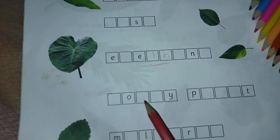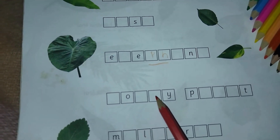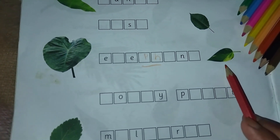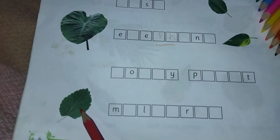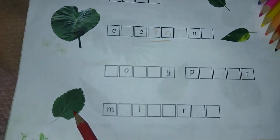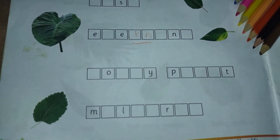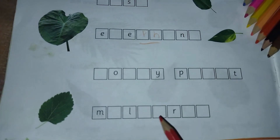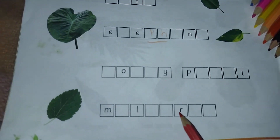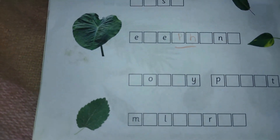M-O-N-E-Y, money; P-L-A-N-T, plant — money plant. This one is the mulberry leaf: M-U-L, mul; B-E-R-R-Y — mulberry.